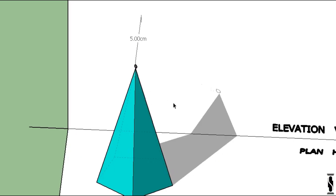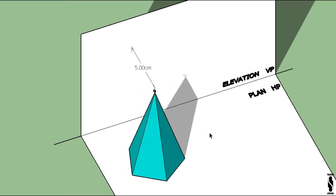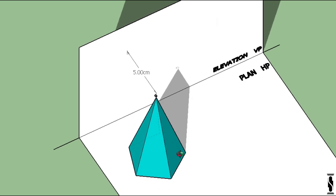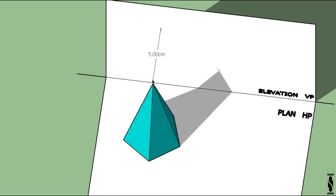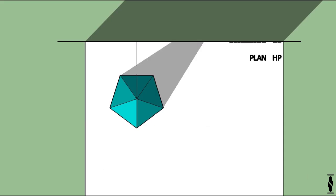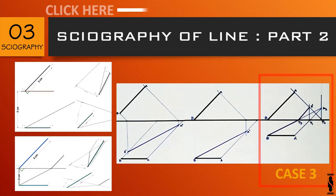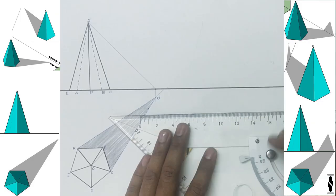We can clearly see how the shadow profile is changing. Now, shadow is falling on HP and VP both, and finishing at a common point. At this point, I recommend you to watch case 3 of my previous video about Sciography of Line Part 2.